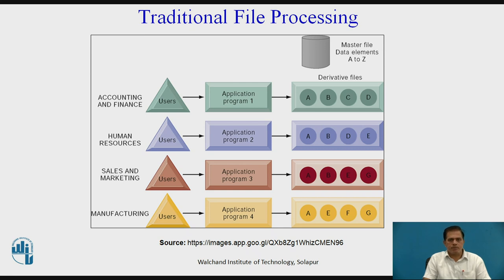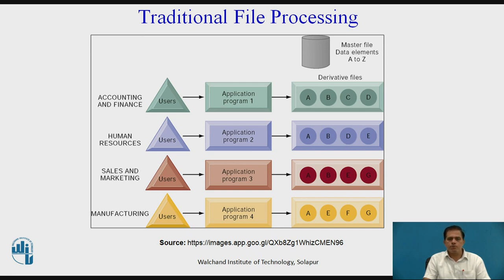In traditional file processing, this diagram illustrates an environment in which different business functions maintain separate data and applications to store and access that data. The traditional approach encourages each functional area in a corporation to develop specialized applications and files. Each application requires a unique data file that is likely to be a subset of the master file. These subsets lead to data redundancy, inconsistency, processing inflexibility, and wastage of storage resources.